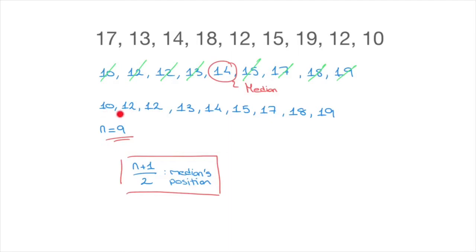So for this list of data that we have here, we know that n, the number of values, is equal to nine. So this formula, n plus one over two, turns into the following: nine plus one over two, which equals ten over two, which is equal to five. And that's the median's position inside this list. That's the fifth value.